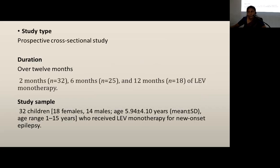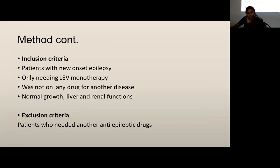The study type is a prospective cross-sectional study, conducted over 12 months. Data collection was done at baseline, 2, 6, and 12 months of levetiracetam monotherapy. The study sample is 32 children with new onset epilepsy receiving levetiracetam monotherapy, with a mean age of 5.94 years, age range of 1 to 15 years, including 18 males and 12 females.